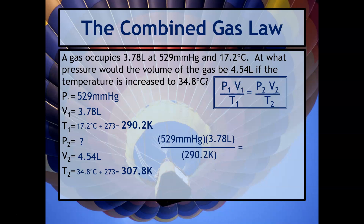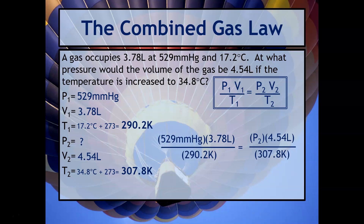Take your time because there are a lot of numbers here. The good news is the mathematics is what we've been doing all along — you can cross multiply and simplify. I do recommend that you actually work these problems yourself so you can verify that you know the math involved. When you do this, you should get 467 millimeters of mercury.